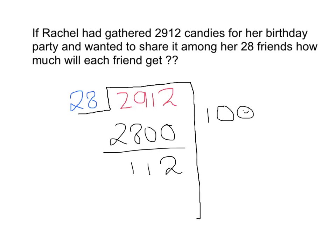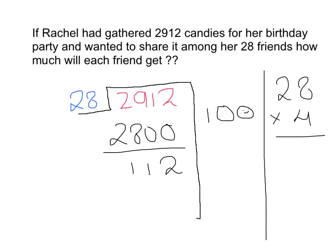I am left with 112. Then I use a quick and easy trick to know at which number 28 will be multiplied to get 112. First I think: 28 into 4 will be 112 because 8 into 4 is equal to 32, so most likely the number will end with 2, and then it will be near 112 — and it is exactly 112.